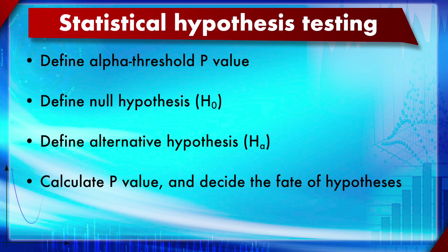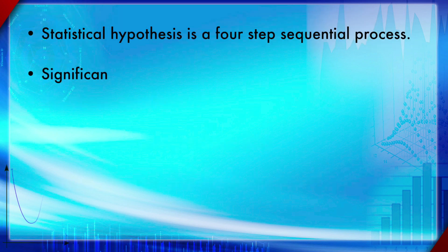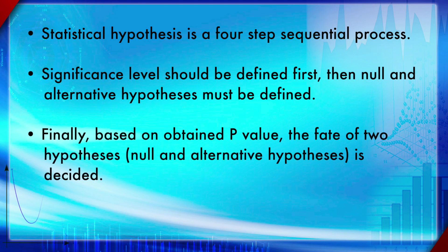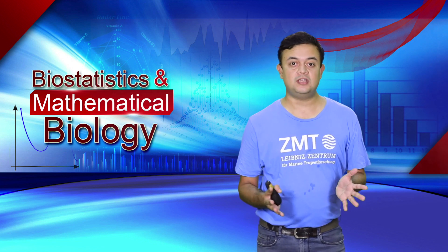Statistical hypothesis testing has four sequential steps. Step 1: define the alpha, which is the threshold p-value. Step 2: define the null hypothesis (H0). Step 3: define the alternative hypothesis (HA). Step 4: calculate the p-value and decide the fate of the hypotheses. The significance level must be defined first; then based on the obtained p-value, the fate of null and alternative hypotheses is decided.